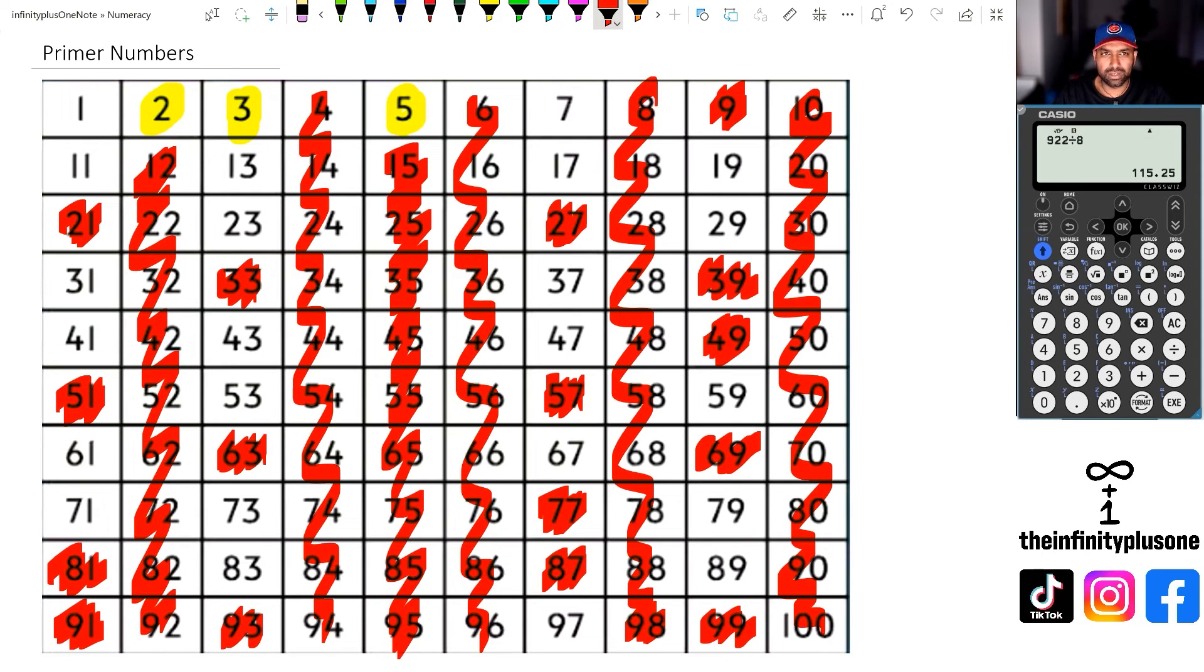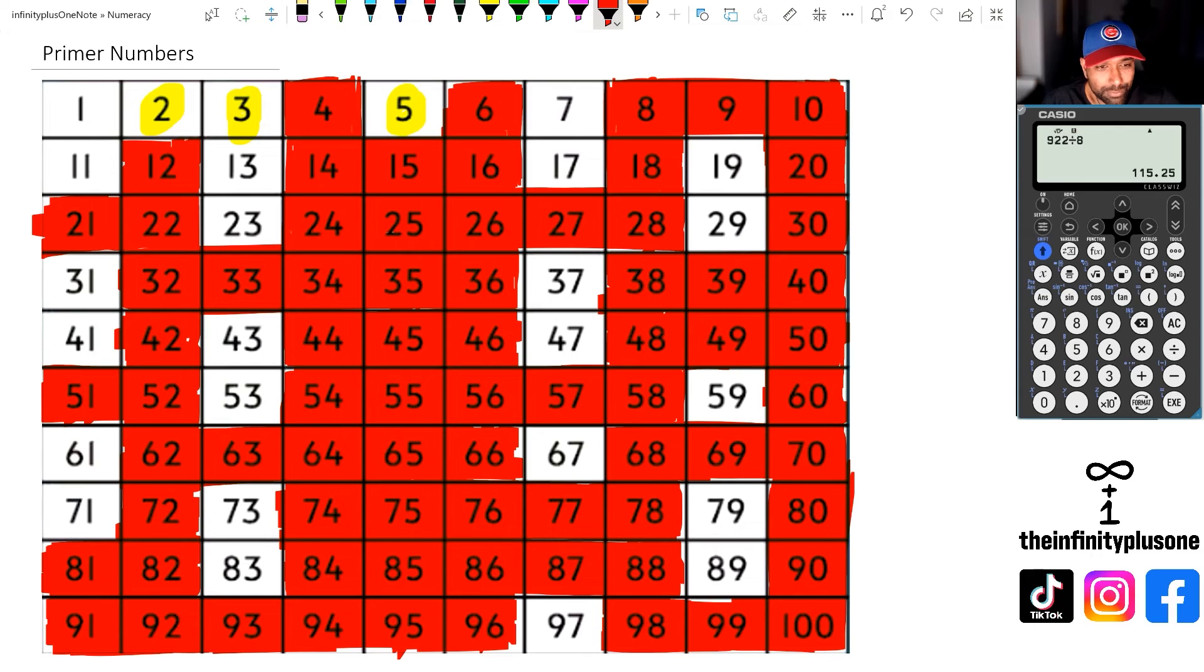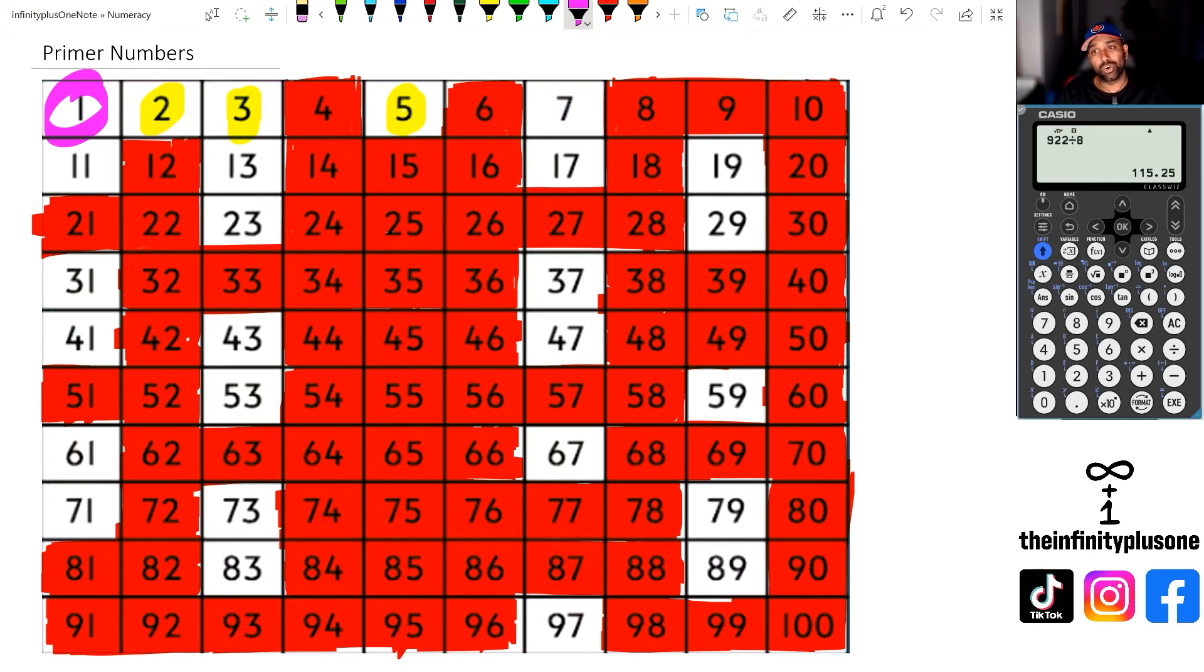Just did a little bit of tidying up, folks. But basically at this point here, we've got an idea of all the prime numbers. Now, just something to be wary of, one is actually not a prime number. One of the rules about prime number is that it's got to be divisible by one and the number itself. And one is just one of those weird numbers where it's not actually considered a prime number.